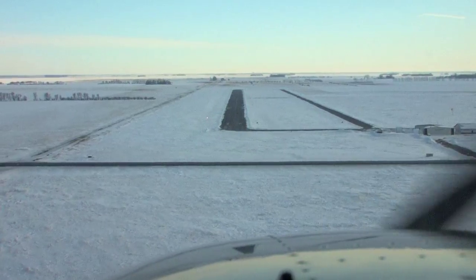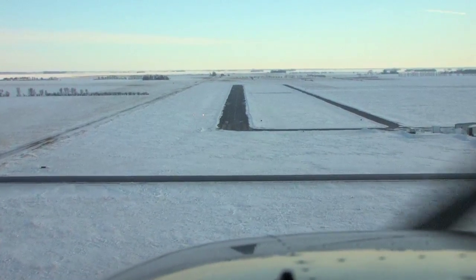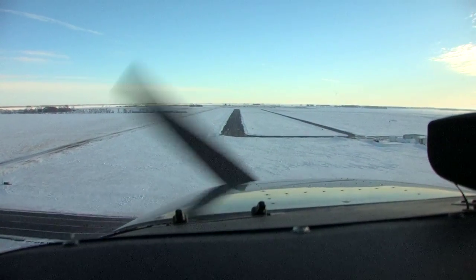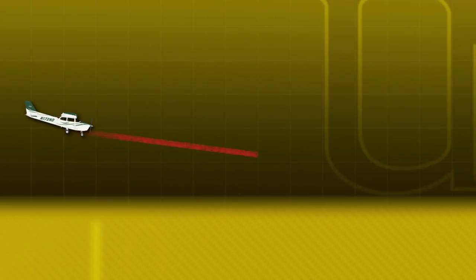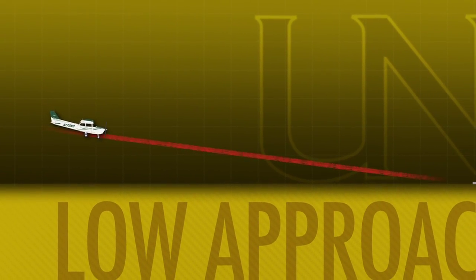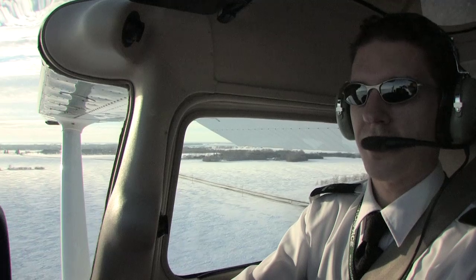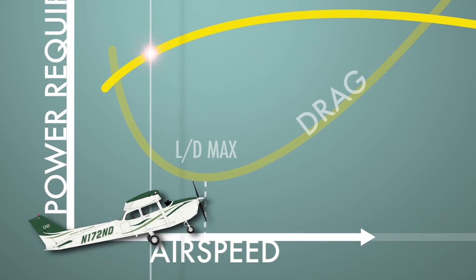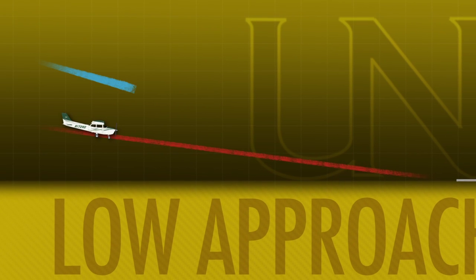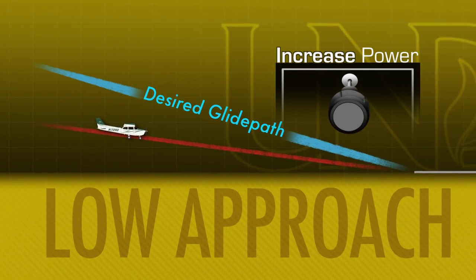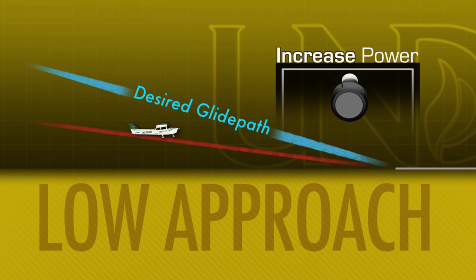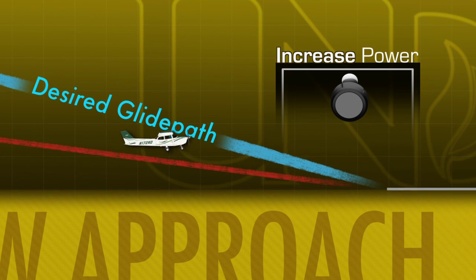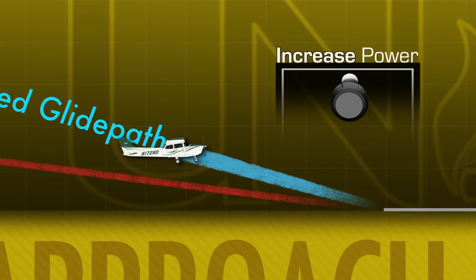Now, what if a go around is not necessary and the aircraft is only slightly low? Then the pilot must adjust to re-establish the aircraft on the proper glide path. In terms of energy, slightly low means that there is not enough potential energy. To fix this, energy must be exchanged and added to get back to the proper glide path. Because the aircraft is on the back side of the power curve, speed will decrease rapidly for any increase in pitch. To account for this, power should be increased for any increase in pitch. Even if speed is just slightly high, there will likely need to be an increase in power, even if it's only a small increase. Once the proper approach path is intercepted, pitch and power must be readjusted to stay on the approach.